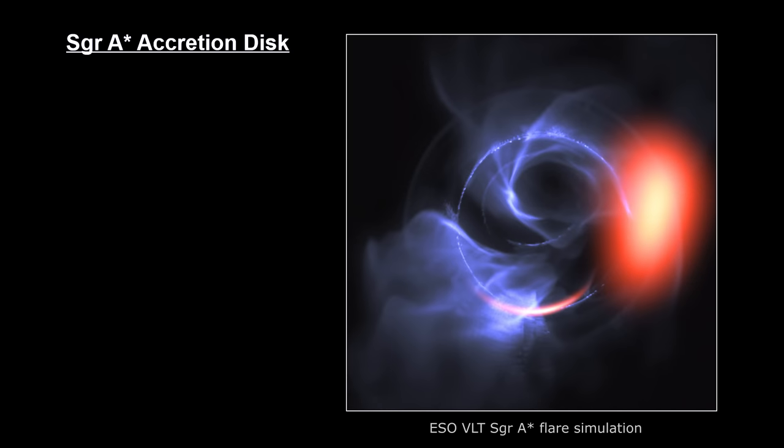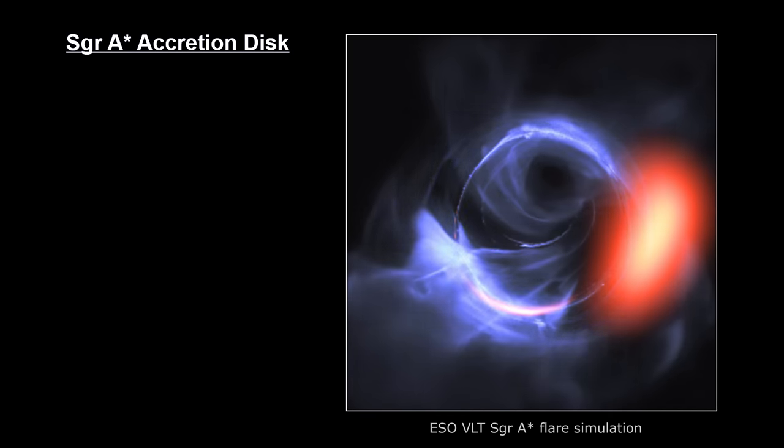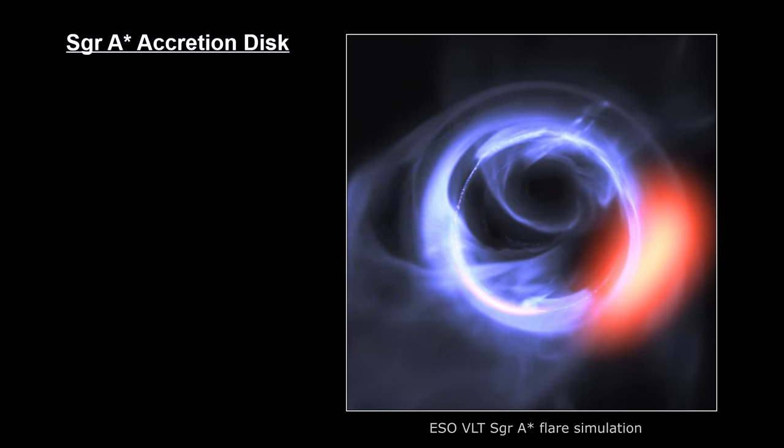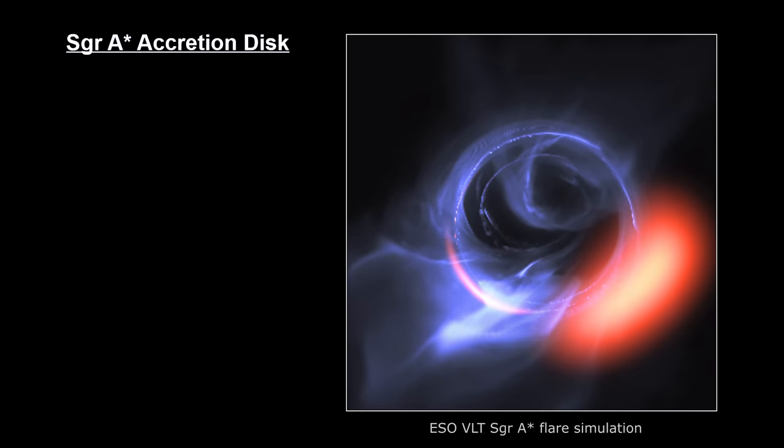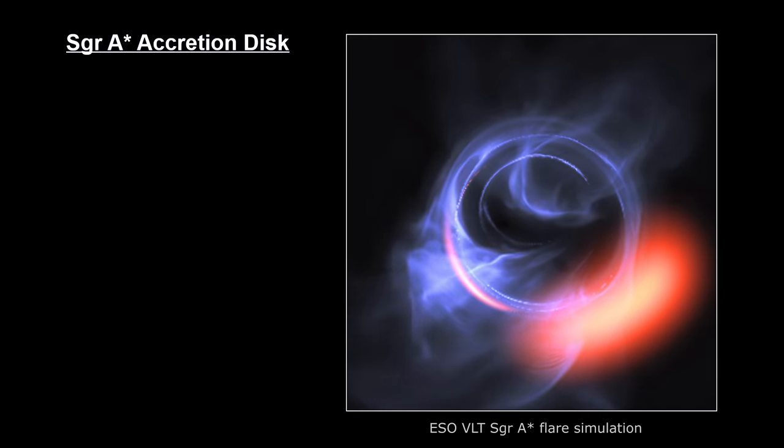In late 2018, ESO's gravity instrument observed flares of infrared radiation coming from the accretion disk around Sagittarius A star.